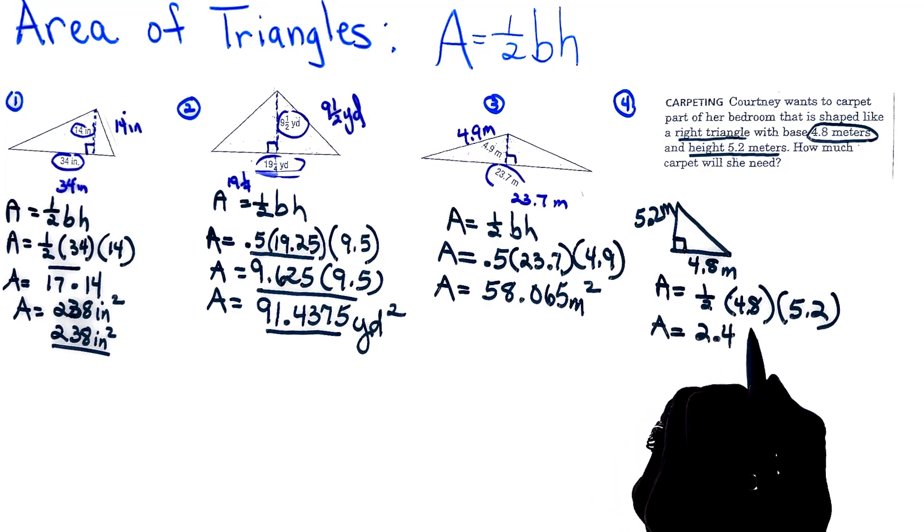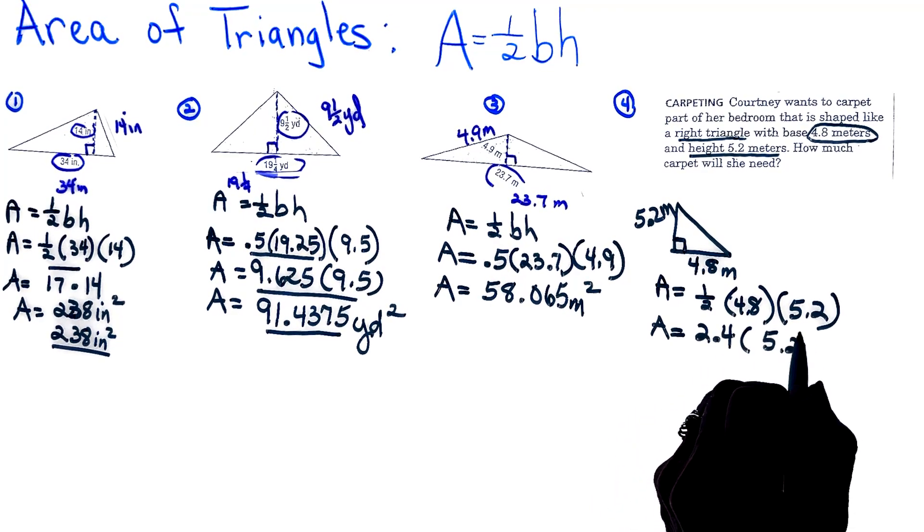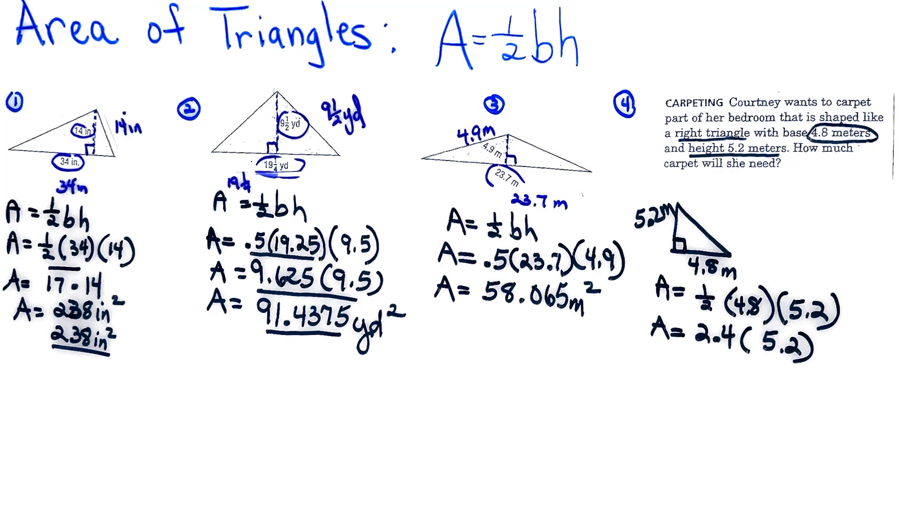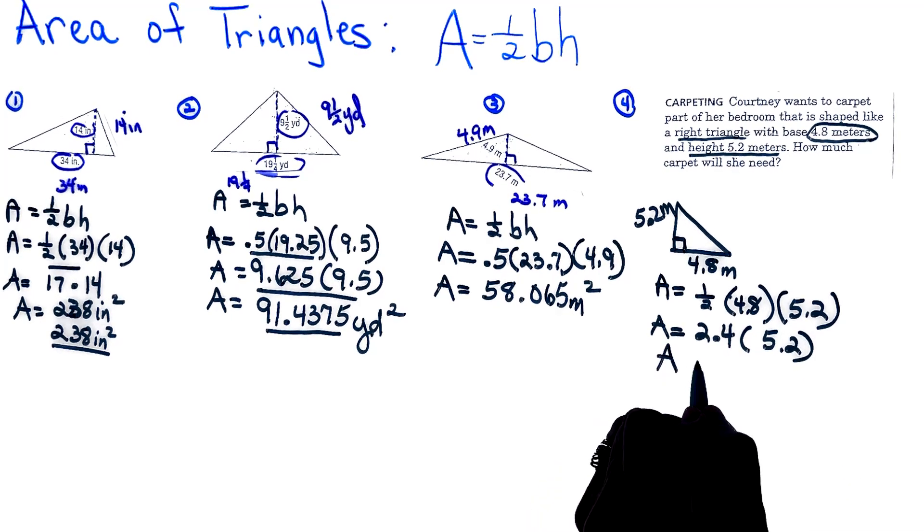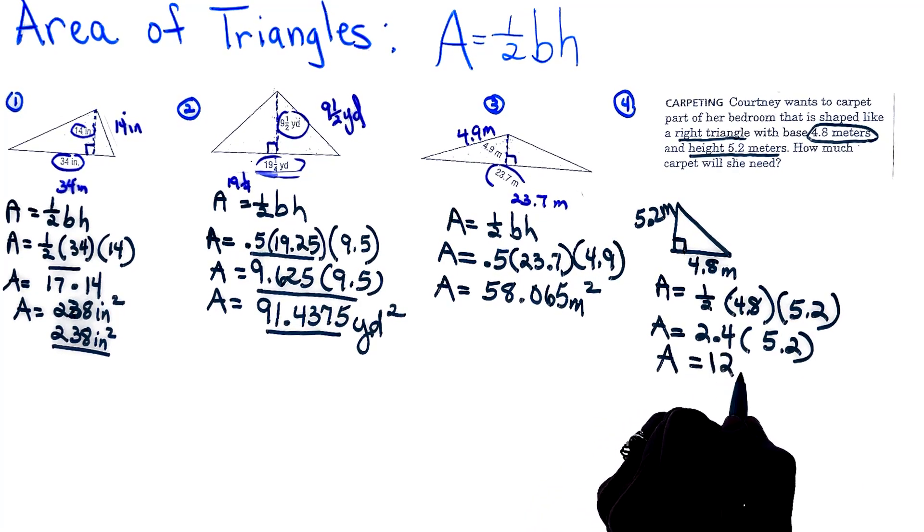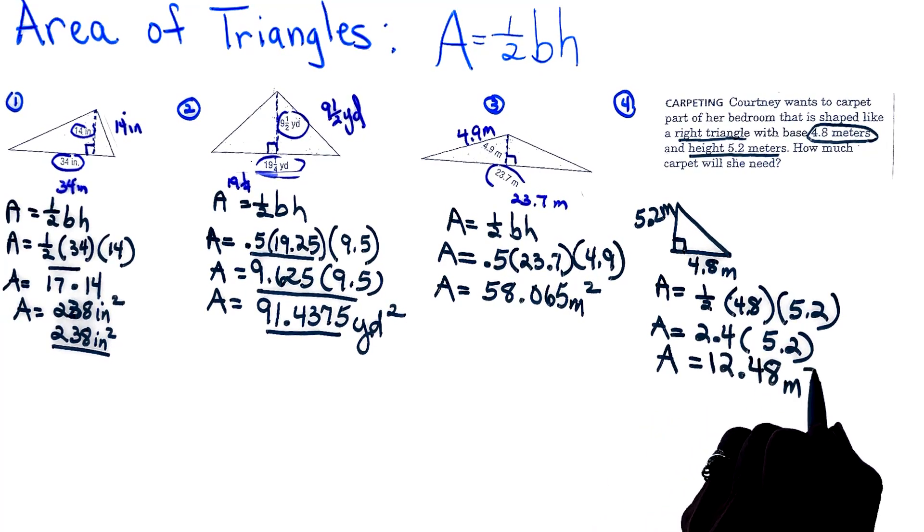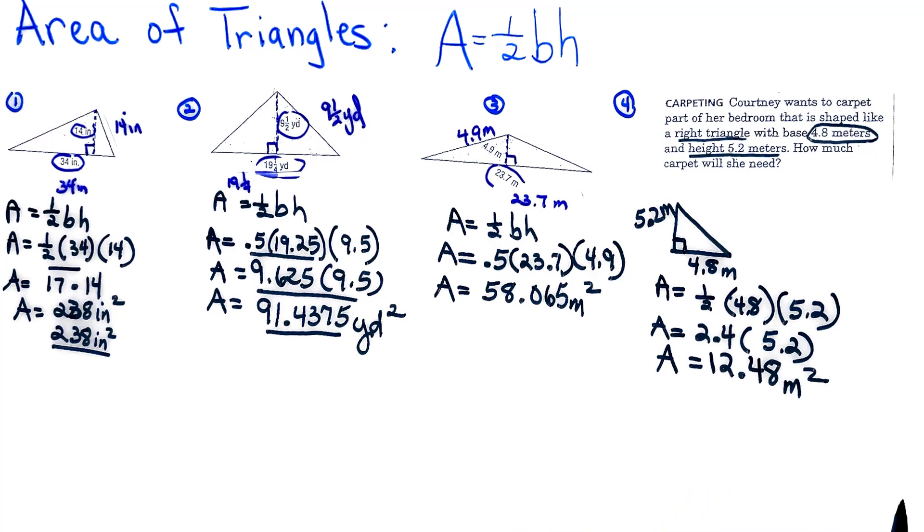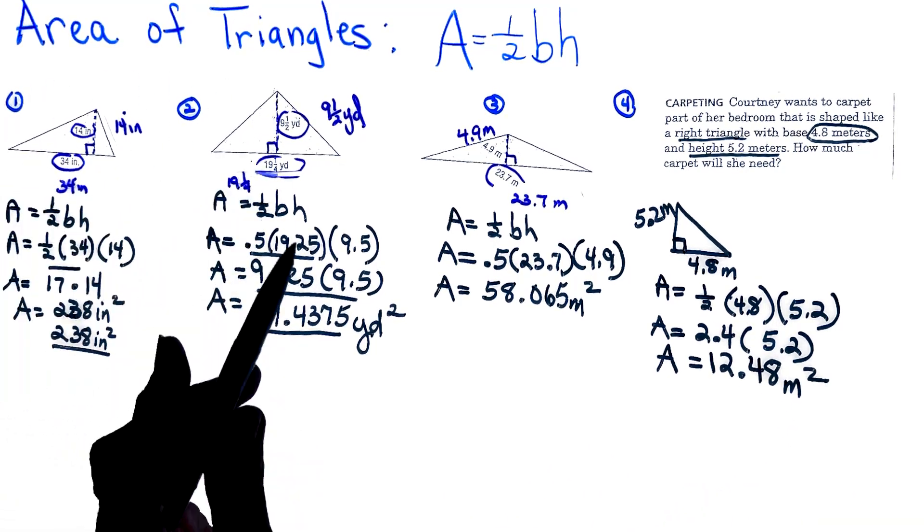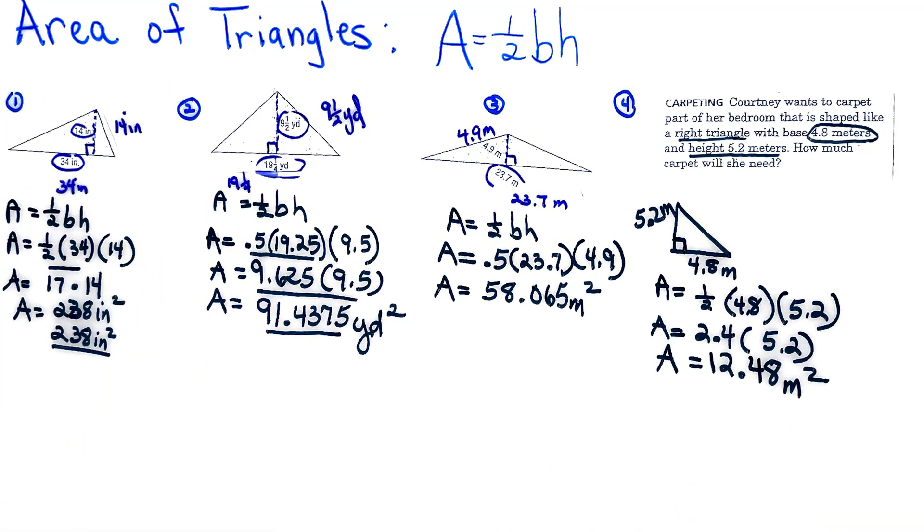So the area of her carpet is 12.48 hundredths, and that is in meters squared. Using the formula area of a triangle: area is equal to one-half base times height.